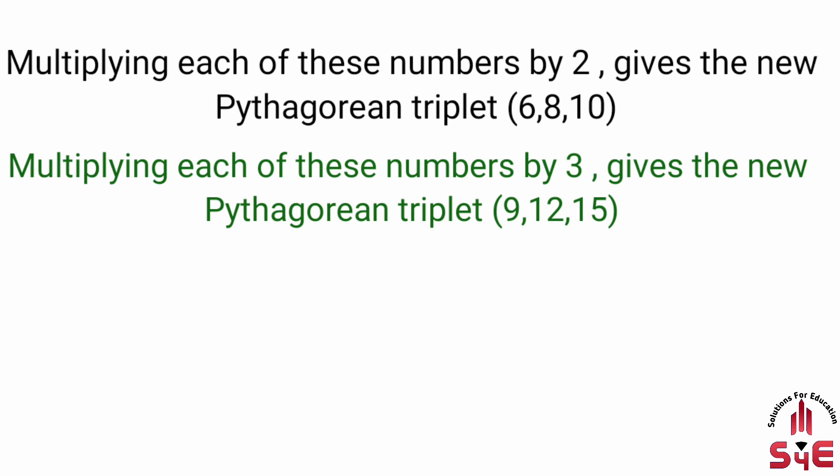New Pythagorean triplets can be easily obtained from a given Pythagorean triplet. हम दिये गए Pythagorean triplet से नए Pythagorean triplet बना सकते हैं — इसके लिए natural numbers से दिये गए Pythagorean triplet को multiply करते जाते हैं। यहाँ Pythagorean triplet 3, 4, 5 को 2 से और फिर 3 से multiply करके new Pythagorean triplets 6, 8, 10 और 9, 12, 15 वगैरा दिखाए गए हैं।